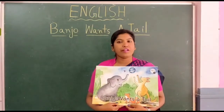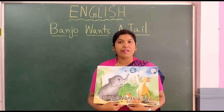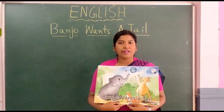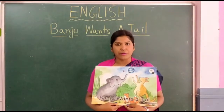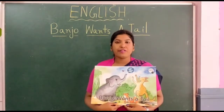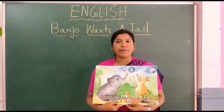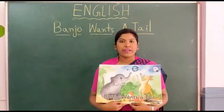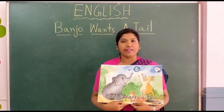Banjo wants a tail of stripes, spots, spies, and many more. Today I will show you some pictures, and you have to frame a sentence with that.